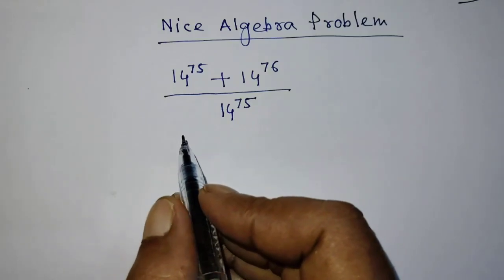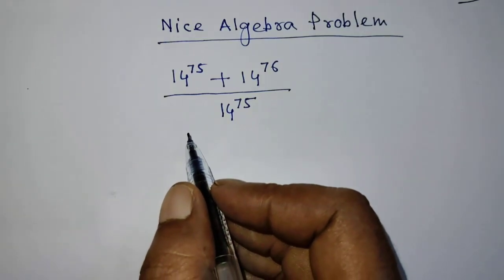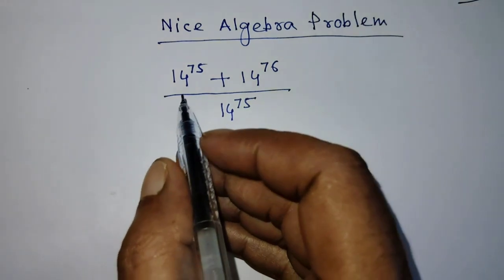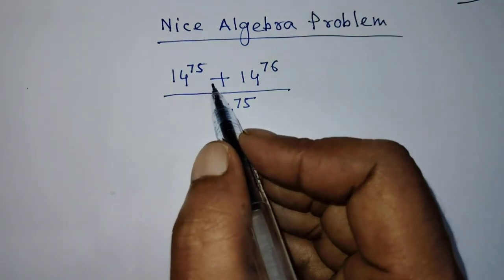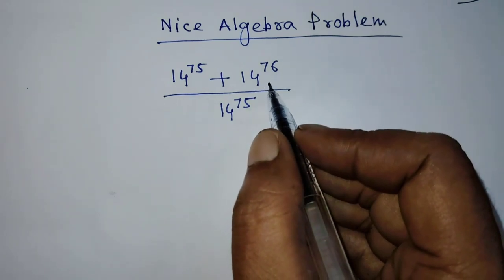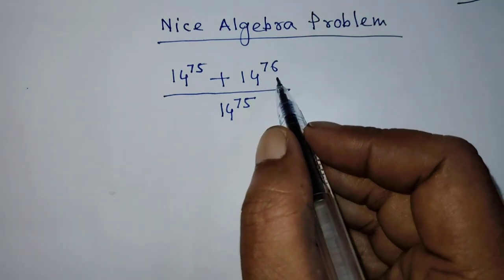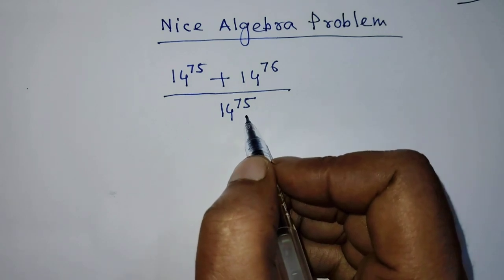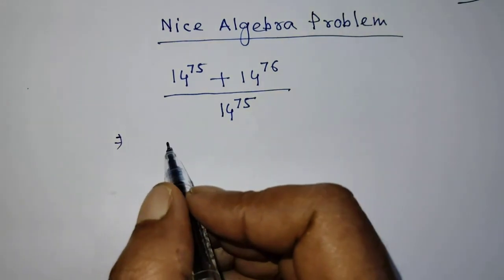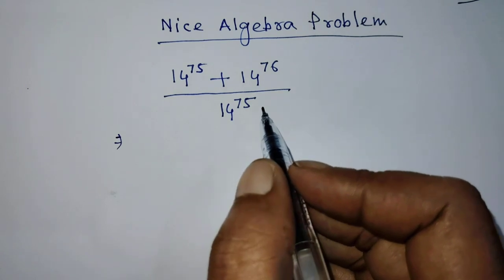Hello guys, welcome. We'll solve this math problem: 14 to the power 75 plus 14 to the power 76, all over 14 to the power 75.